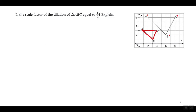Whenever any line segment is slanted, the only way to get the length is by using a distance formula, which is a headache. So let's avoid that by just looking at this horizontal side. We can get the measurement by counting the blocks: it's 1, 2, 3. And if we compare it to its corresponding side over here, which is 1, 2, 3, 4, 5, 6 — obviously the scale factor is 2.